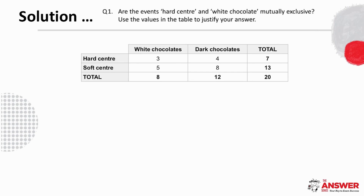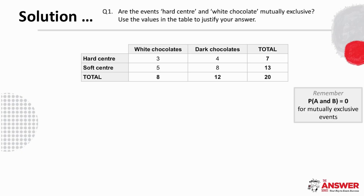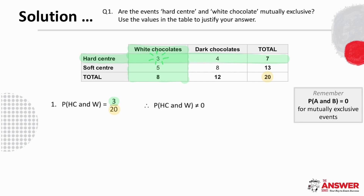For the first question, we remember that for mutually exclusive events, the probability of A and B must equal 0. So let's find the probability of chocolates with a hard centre and white chocolate by following along for hard centre and for white chocolate to find where they meet — here at 3. We are considering this from the entire box of 20 chocolates, so the probability is 3 over 20. Therefore this probability is not 0, which means these events are not mutually exclusive.